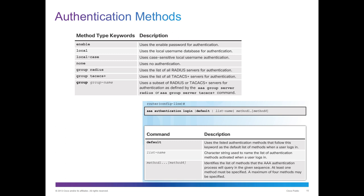The default option will use the listed authentication method following the keyword as the default list. We have a list name, which is a character string used to name the list of authentication methods active when a user logs in. These methods will identify the list that the AAA authentication process will query in the sequence given. There must be at least one method specified, but you can do a maximum of four.